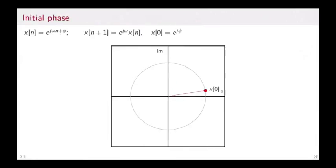If there is an initial phase, we don't start from the real line, but we will start with an angle θ. But then, the same story goes on. And as we go, x[6], 7, etc. At x[12], we will be back at the same location as x[0].